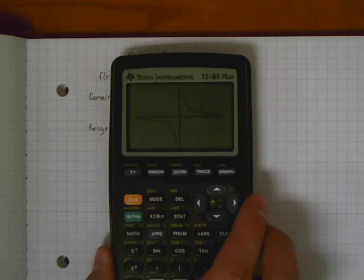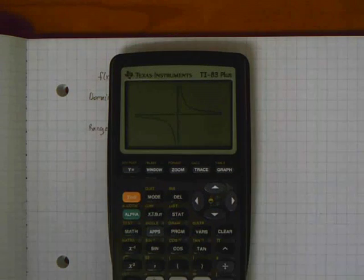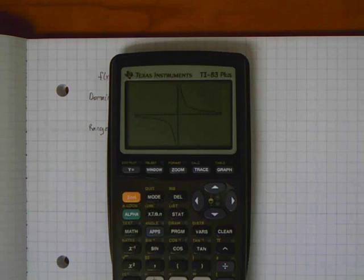Now the range is all the possible y values, all the valid y values. When looking at this, there is one y value in particular that the graph never touches and it looks like it never will.